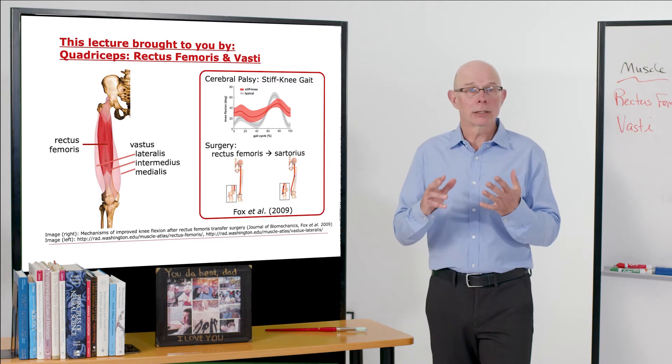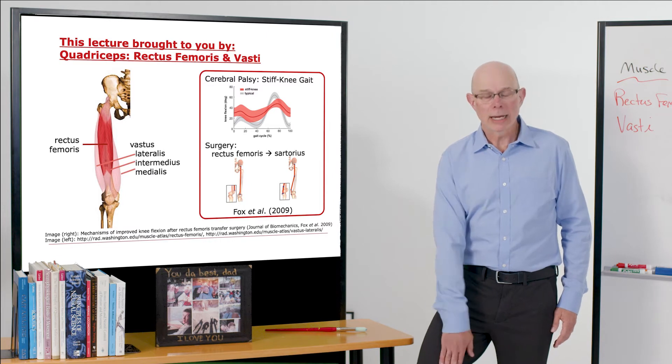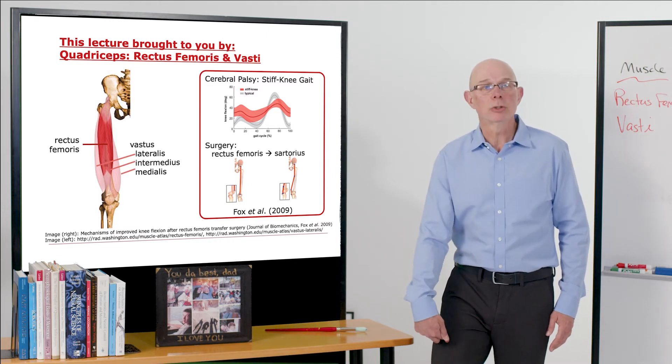Vastus lateralis, on the outside of the leg, vastus medialis on the middle of the leg, and vastus intermedius, which is deep to the rectus femoris.